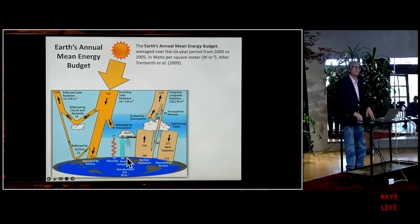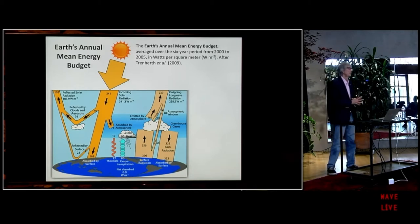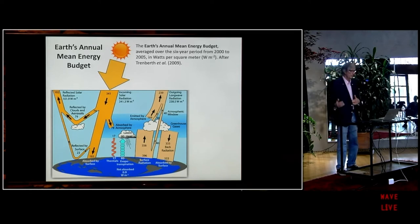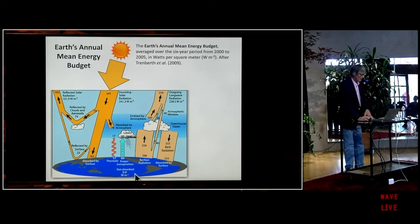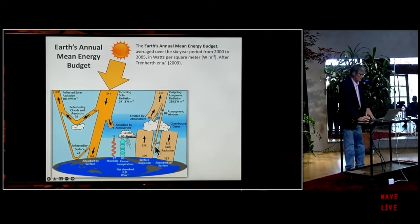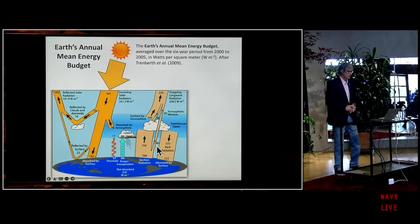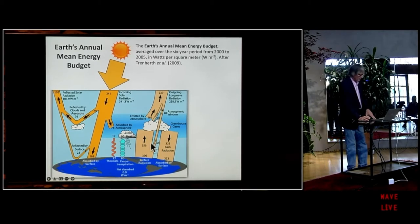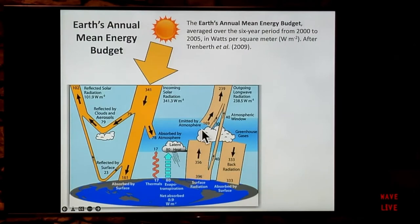This is called the latent heat flux or the evaporative heat flux. When you come out of a swimming pool and the wind hits you, you cool down because the water on your skin is evaporating and that carries heat away. As water evaporates from the land and from the ocean, it exerts a cooling effect. Finally, on the right here, we have the flow of infrared radiation or long wave radiation. The earth is radiating this long wave radiation, and a large amount of it is trapped by greenhouse gases, such that about 80% of the long wave radiation leaving the earth actually comes back down.